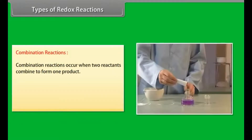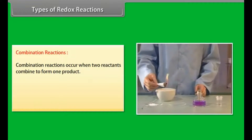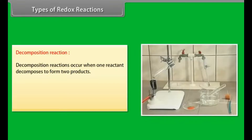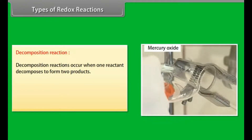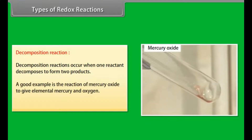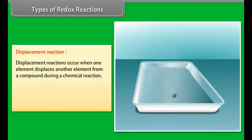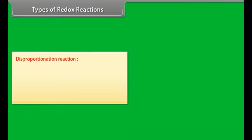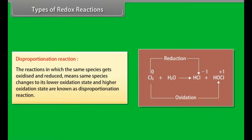Types of redox reactions: Combination reactions occur when two reactants combine to form one product — a good example is the reaction of magnesium with air. Decomposition reactions occur when one reactant decomposes to form two products — a good example is the reaction of mercury oxide to give elemental mercury and oxygen. Displacement reactions occur when one element displaces another from a compound — a good example is the reaction of sodium with water. Disproportionation reactions are those in which the same species gets both oxidized and reduced, changing to both a lower and higher oxidation state — for example, chlorine is oxidized and reduced at the same time.